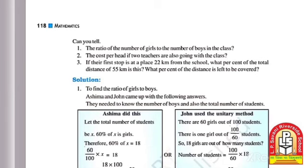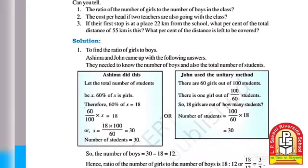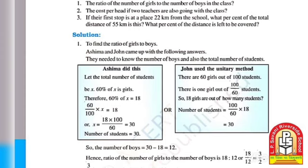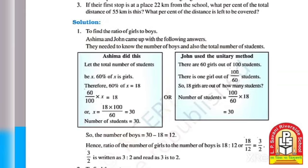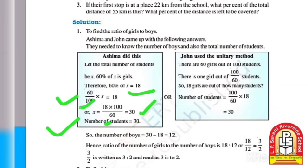Question 1: Find the ratio of the number of girls to the number of boys in the class. Asima solved it as follows: let the total number of students be x. Then 60% of x = 18, so 60/100 × x = 18, giving x = 18 × 100/60 = 30. So the total number of students is 30.